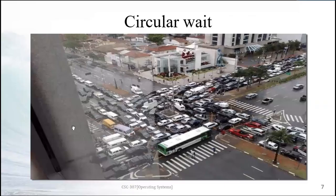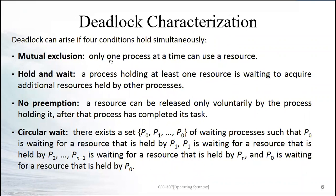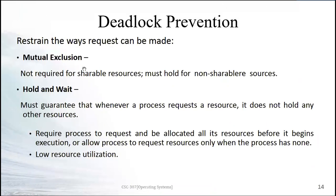Mutual exclusion originally means only one process at a time can use a resource. The updated rule allows resources to be shareable between multiple processes. However, some resources are non-shareable — for example, a USB drive being used for data transfer may not be shareable. Whether a resource is shareable depends on the type of resource being used.